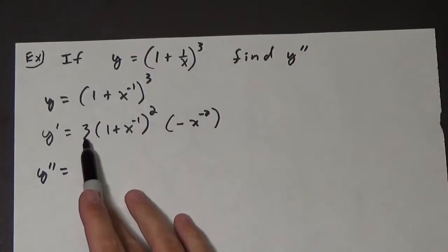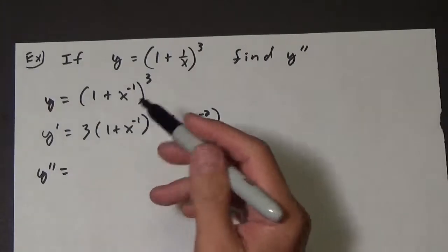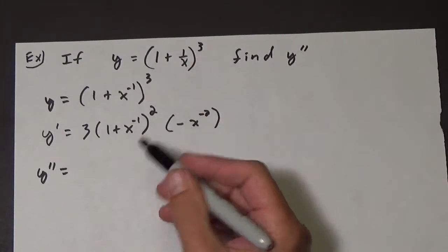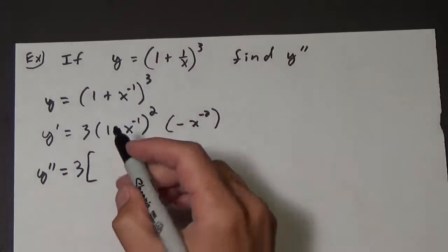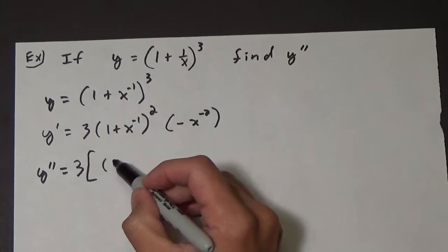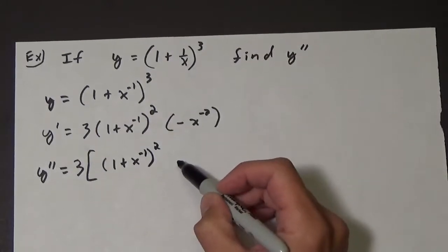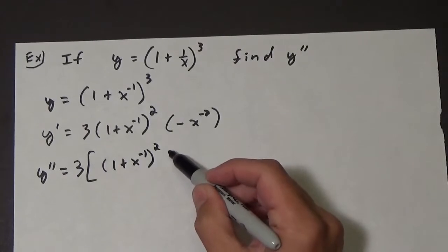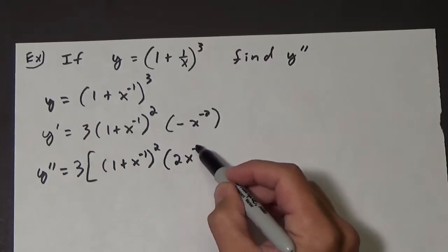Okay, now with this product rule, you have to decide if the 3 stays with one of the functions, or you just keep it out with big parentheses. I'm going to keep it outside with some big parentheses and multiply it later. So we have the first, which is 1 plus x to the negative 1 squared, times the derivative of the second, which is negative times negative 2 is 2x to the negative 3.